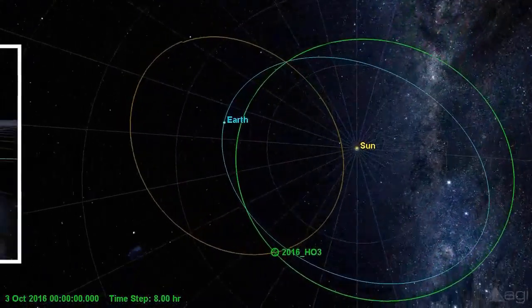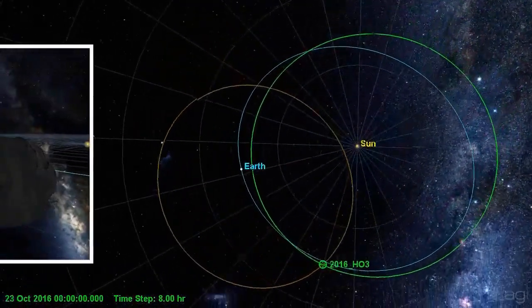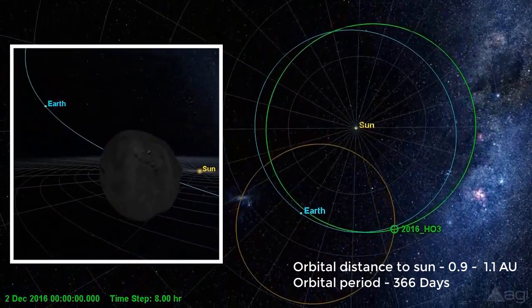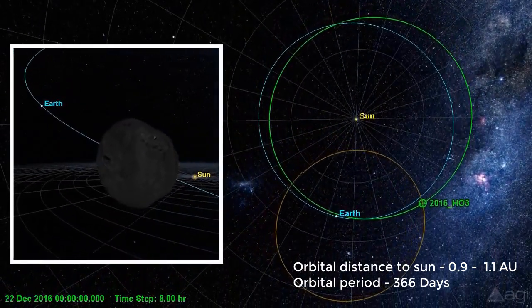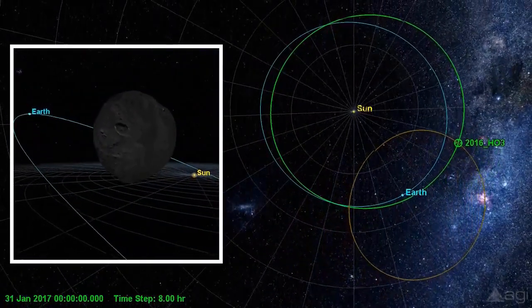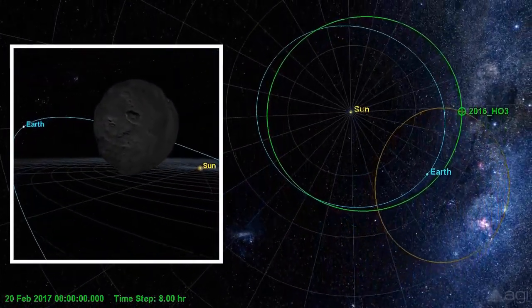This quasi-satellite orbits the Sun at a distance of 0.9 to 1.1 astronomical units once every 366 days. Its orbit has an eccentricity of 0.10 and an inclination of 8 degrees with respect to the ecliptic.